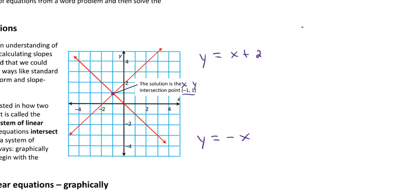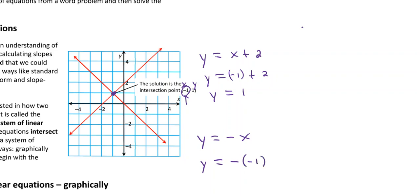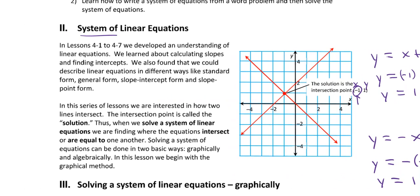That point is shared by both lines, so it's considered the solution. We can verify: substituting x = -1 into y = x + 2 gives y = 1. Substituting x = -1 into y = -x also gives y = 1. The x and y values are the same for both equations — that's what makes it a solution. There are some applications of this coming up.